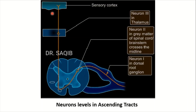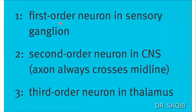So this is the main arrangement of the three neurons. First order neuron in the sensory ganglion — dorsal root ganglion. Second order neuron in the CNS — the axon always crosses the midline. Third order neuron is in the thalamus.